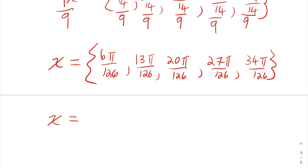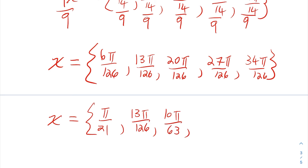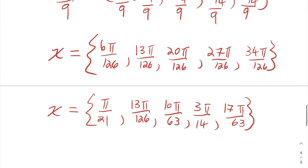The ones that need to be reduced: 6pi over 126 reduces to pi over 21 (6 goes into both). 13pi over 126 doesn't reduce at all. 20pi over 126 — divide both by 2 — gives 10pi over 63. 27pi over 126 — 6 goes into both — gives 3pi over 14. And lastly, 2 goes into 34 and 126, so that last one is 17pi over 63. Those are the x-values for the key points.